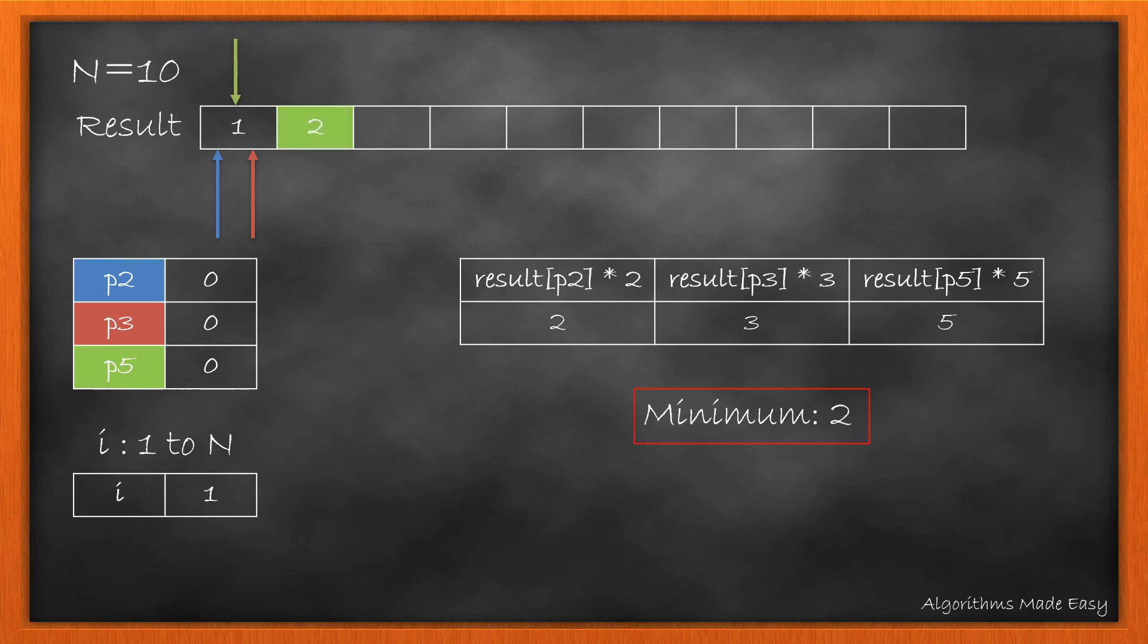So we put it at index i in the result. Now as we have calculated ugly number of the current pointer for 2, we have to increment it so that the next time it gives us the next ugly number for 2. So we increment the pointer for 2. We will check the same for 3 and 5 as well, but as both values are not used till now we won't change the pointer for them.